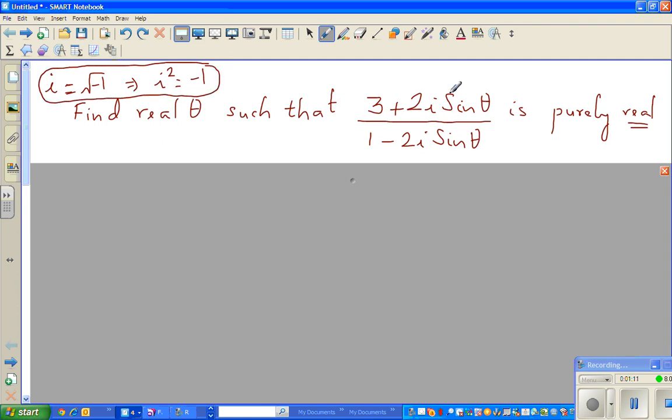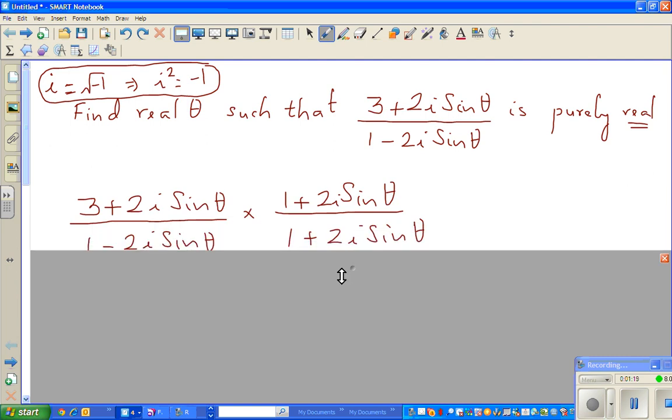We want to find all values of theta which are real, not imaginary. Whenever you have a complex number in this form with a complex denominator, you need to multiply by the conjugate. The conjugate of 1 - 2i·sin(θ) is 1 + 2i·sin(θ).